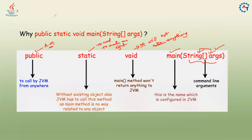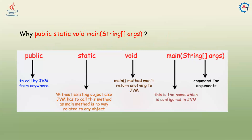So the reasons are: public means it can be called by JVM from anywhere; static means no need to create an object to call this method; void means main method will not return anything; 'main' is a predefined name configured in Java to know where to start class execution; and String args is to pass command line arguments. That is the reason behind why main method is public static void main.